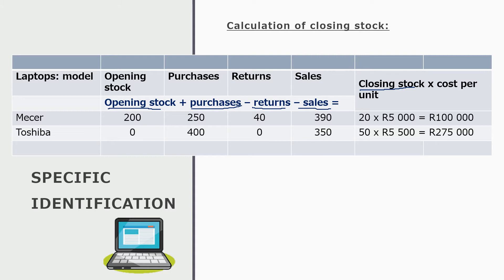In this case, we are selling laptops — two different models: Mesa and Toshiba. For Mesa, opening stock was 200 units at the beginning of the financial year. During the year, we purchased another 250, returned 40, and sold 390. So 200 plus 250 minus 40 minus 390 means at the end of the year I have 20 Mesa laptops left. If the original invoice shows a cost of R5,000 each, 20 times R5,000 gives me R100,000 — the value of Mesa computers in stock at year end.